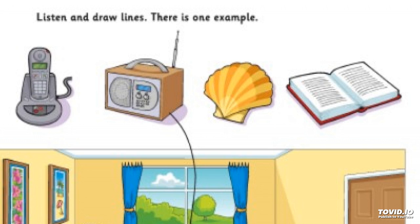Part four. Look at the picture. Listen and look. There is one example. Can you see the bird in the water? Yes, I can. Right. Now color it orange. Pardon? Color the bird in the water orange. Can you see the orange bird in the water? This is an example. Now you listen and color.